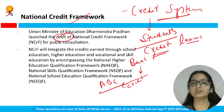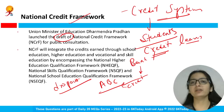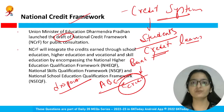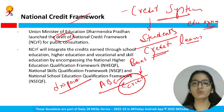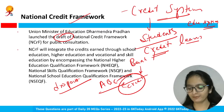The purpose of the National Credit Framework is to address dropouts. Whenever a student drops out for any reason, they can re-enter education from where they left off, since their credits are saved. This provides flexibility for anytime, anywhere learning and re-entry into the education system, allowing them to move ahead from their accumulated credits.